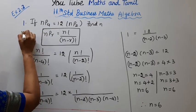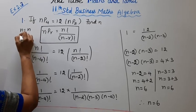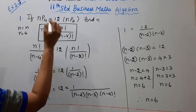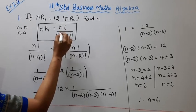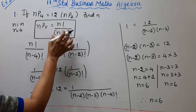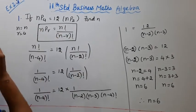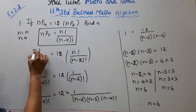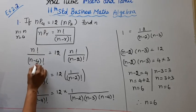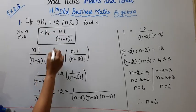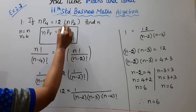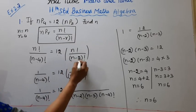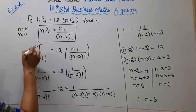Applying the formula for nP4: n factorial divided by n minus 4 factorial. This equals 12 times nP2, which is n factorial divided by n minus 2 factorial.